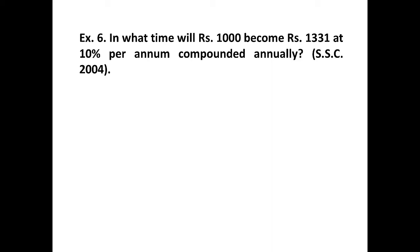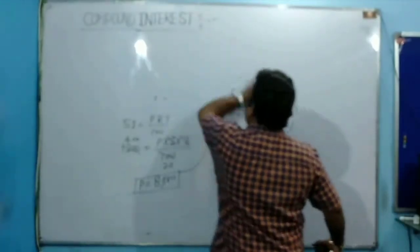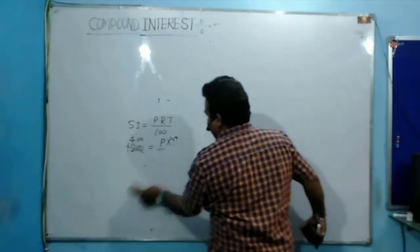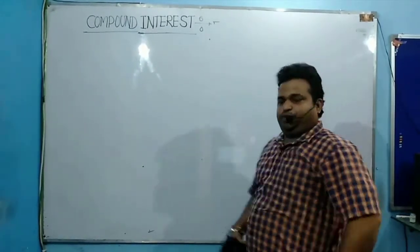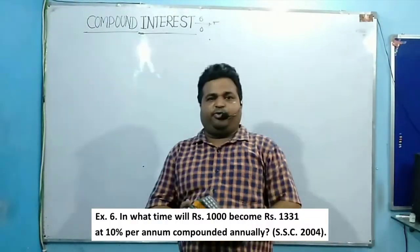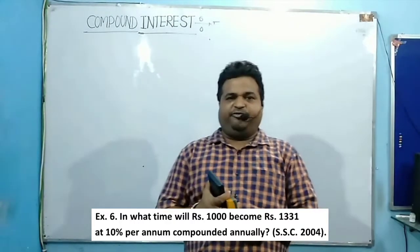In what time will rupees 1000 become rupees 1331 at 10% per annum compounded annually? Look at the board. This is a very good question. Now in this question, what is given to us? It is mentioned that rupees 1000 will become 1331.